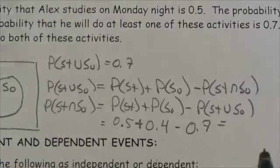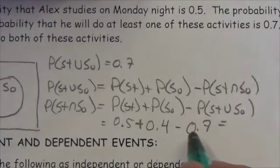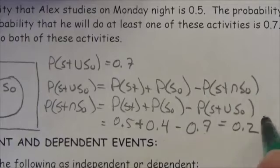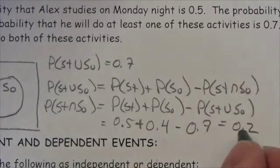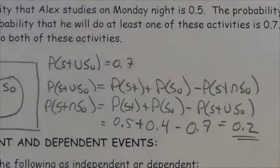Okay, so 0.5 plus 0.4 is going to be 0.9 minus 0.7 is 0.2. So the probability that he will do both of those activities is 0.2.